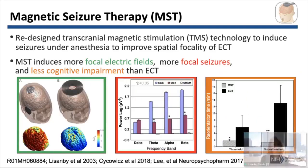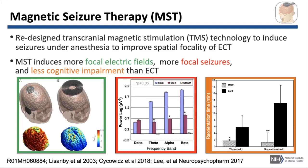From a series of studies, MST induces more focal electric fields compared to ECT — MST is shown in panel B on the far right and ECT in panel A. These more focal fields induce more focal seizures, as shown in the center plot comparing seizure power for ECT in blue and MST in red. On the right, MST induces less cognitive impairment, measured as minutes to regain orientation after the seizure — hatched bars for MST and black bars for ECT.